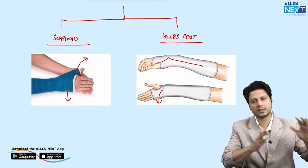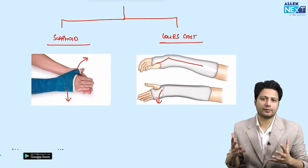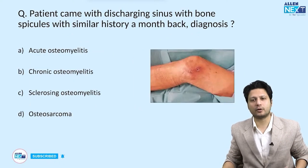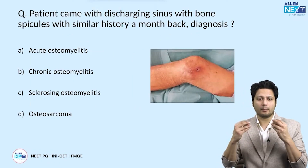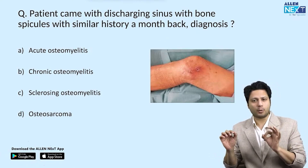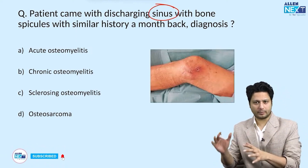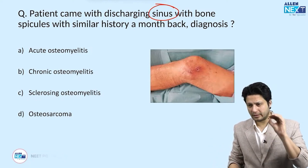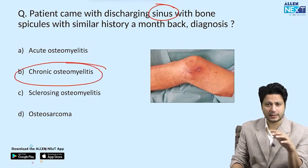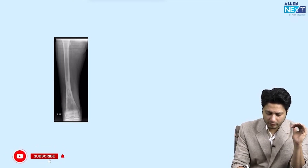That was the third segment. The fourth segment is related to bone and joint infections. In orthopedics, if a clinical scenario mentions a sinus with a bony spicule or drainage of an abscess, the answer is chronic osteomyelitis. On X-ray, you identify chronic osteomyelitis by a sequestrum — a dense segment of bone surrounded by granulation tissue.